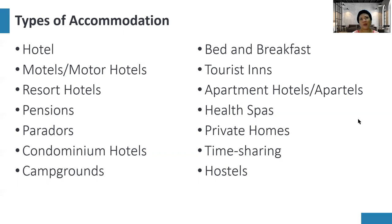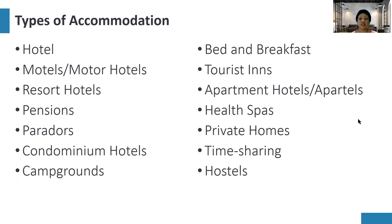Apartment hotels are catered to the market who stays longer compared to other types of guests. Next is health spas. Spas usually cater to guests who visit for massage or relaxation. Typically, health spas are in a separate facility, but some hotels also have their own spas.